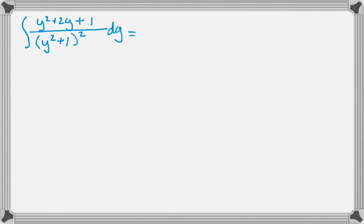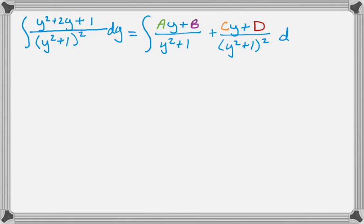So this integral that I started with, like that, has become, well that was my kind of generic form. And so I know A is 0, B is 1, C is 2, and D is 0.